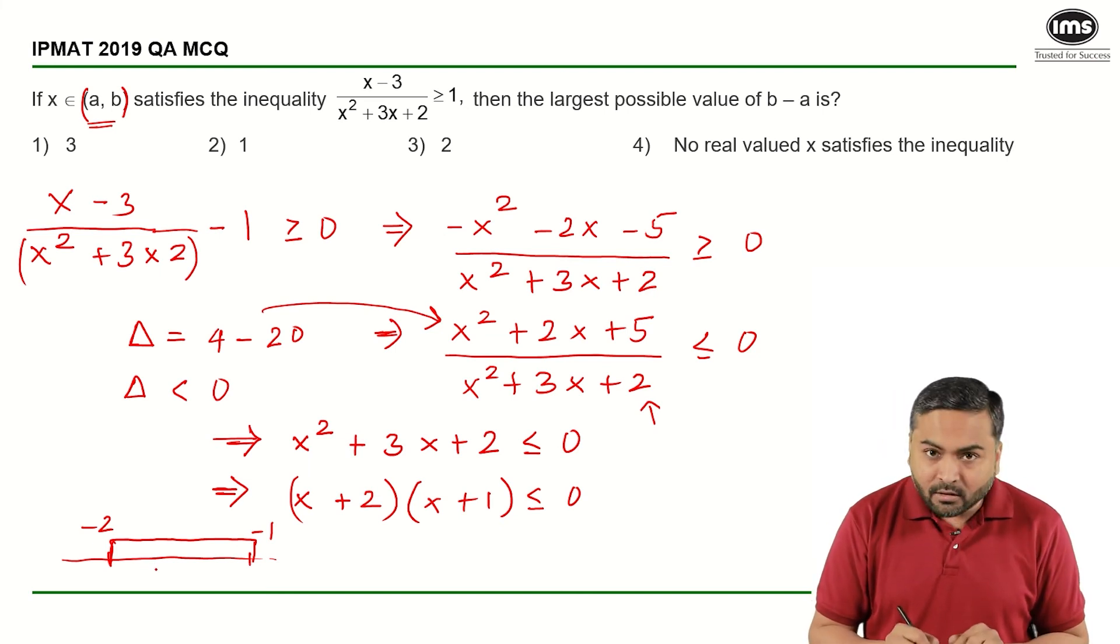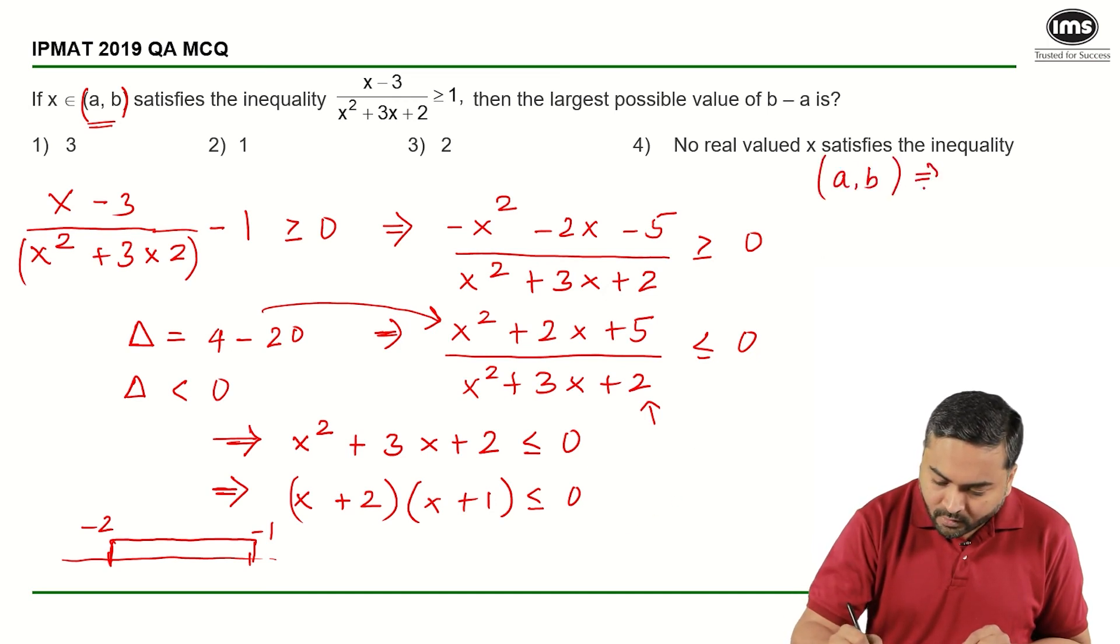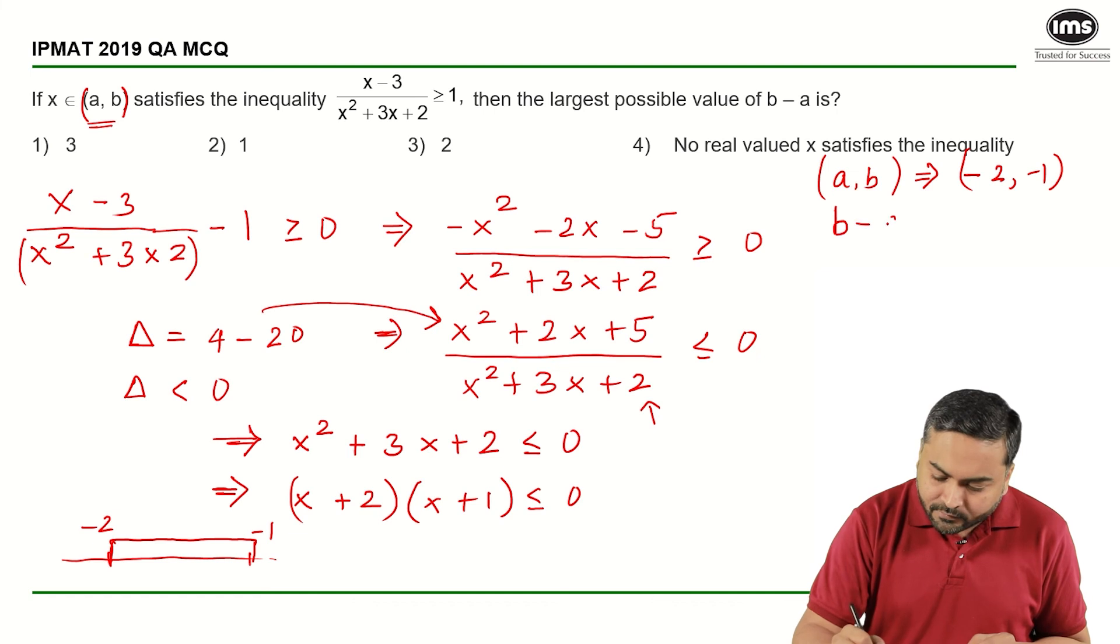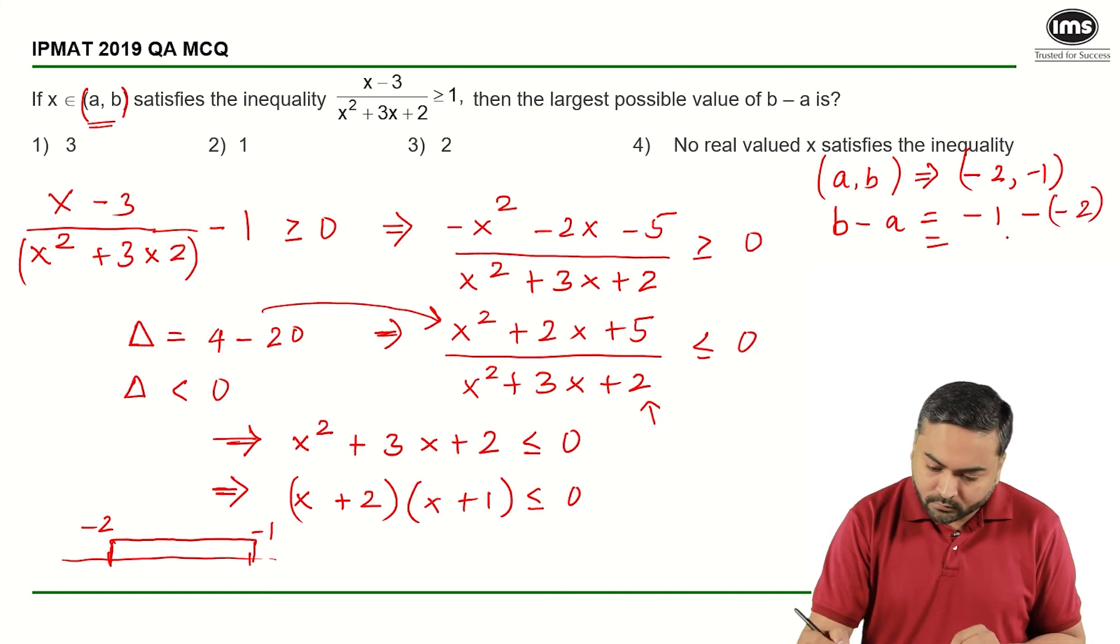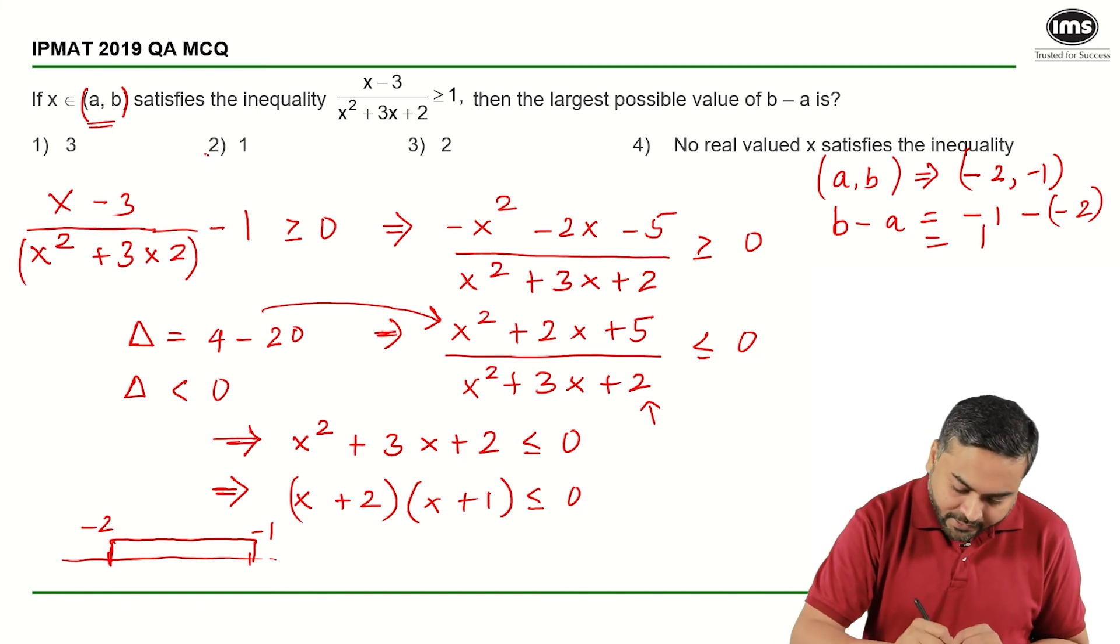So from here, I get (a, b) as (-2, -1). So b minus a will be nothing but -1 minus (-2) and that is equal to 1, and that is the correct answer.